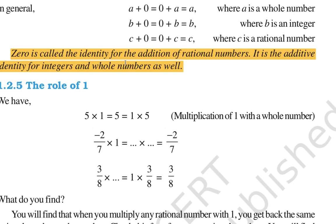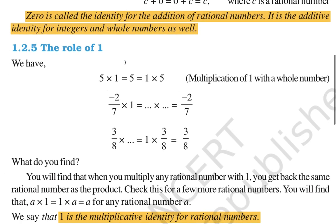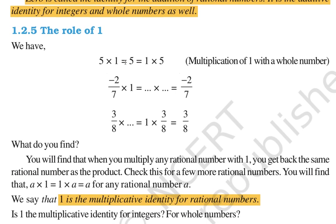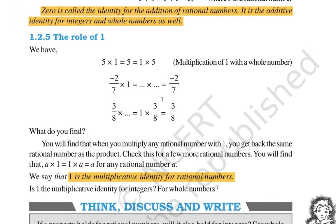If you add zero to a number, the number stays the same. The role of one: if you multiply a number by 1, the number stays the same and there is no change — so we call 1 the multiplicative identity. Any number multiplied by 1 gives the same number as result.